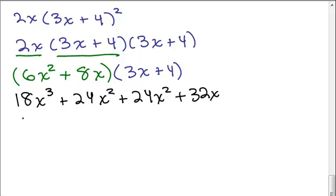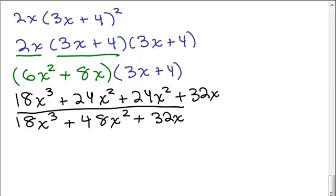So if we add the like terms, the 2 middle terms or the x squared terms can be added together combined. We have 18x cubed plus 48x squared plus 32x. So that's one way to do this problem.